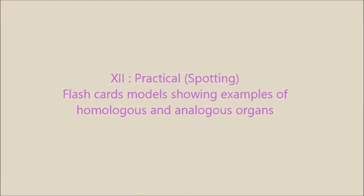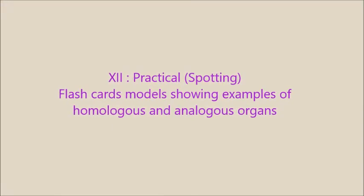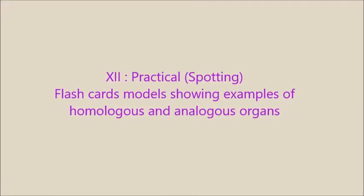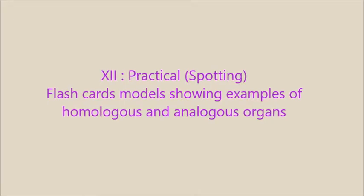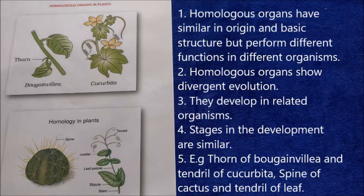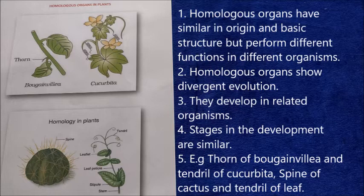Good morning friends. Here we are going to know about homologous and analogous organs. Homologous organs are those organs which are similar in origin and basic structure but their functions are different. Homologous organs show divergent evolution and are developed in related organisms. Homology indicates common ancestry.